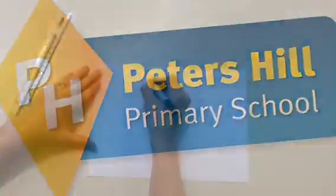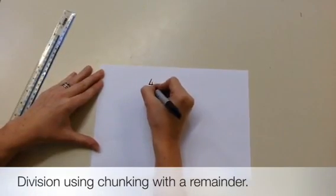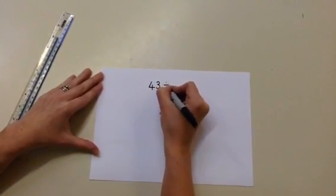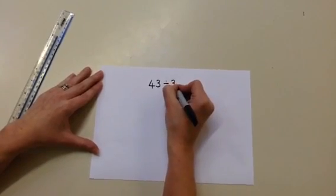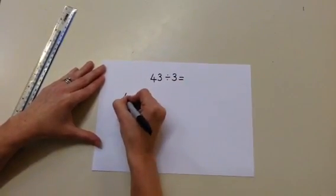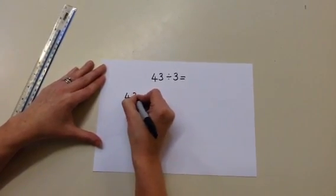Division as chunking with remainders. As before, we're going to use column subtraction to calculate how many groups are within a number. So here the sum is 43 divided by 3. How many groups of 3 are there in 43?